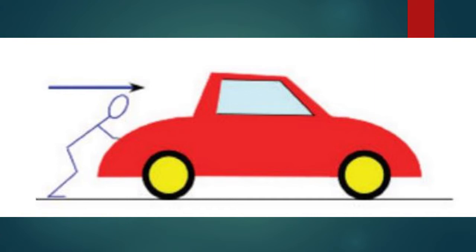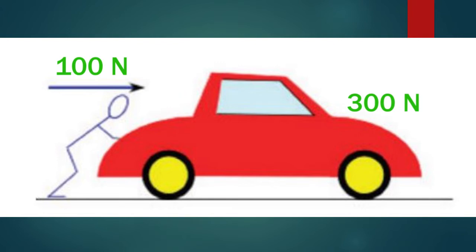In order to move this car in a certain direction, a person has to apply the force in the same direction. Let's assume that the minimum force we should apply on the car in order to move is 300 Newton, and one person can apply only 100 Newton. If one person tries to push this car, the force is not enough as 100 Newton is less than 300 Newton.